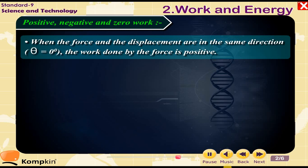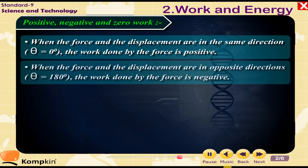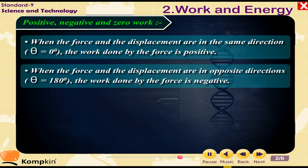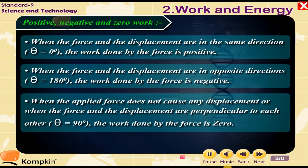Positive, negative, and zero work: when the force and displacement are in the same direction (θ = 0°), the work done is positive. When the force and displacement are in opposite directions (θ = 180°), the work done is negative. When the applied force causes no displacement, or when the force and displacement are perpendicular to each other (θ = 90°), the work done is zero.